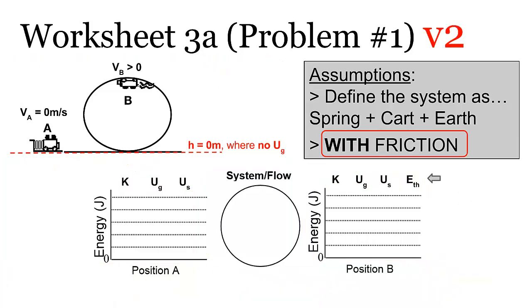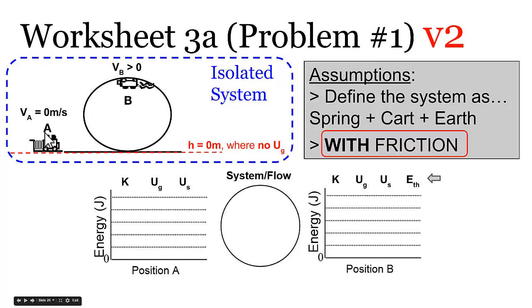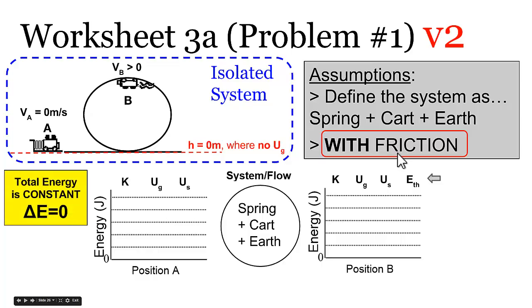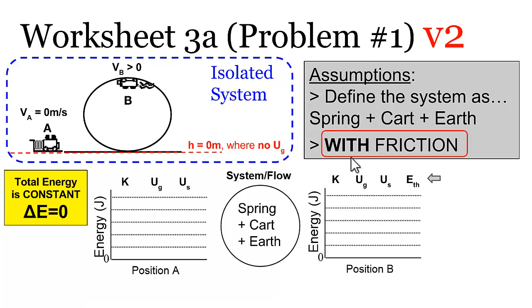Let's now do the same situation again, but assume that friction is significant. We still define the system as the spring, the cart, and the earth. We circle the entire system and still treat it as isolated, so no additional energy comes in or goes out. Even with friction present, the total energy within the system must remain constant — let's see how friction changes things.